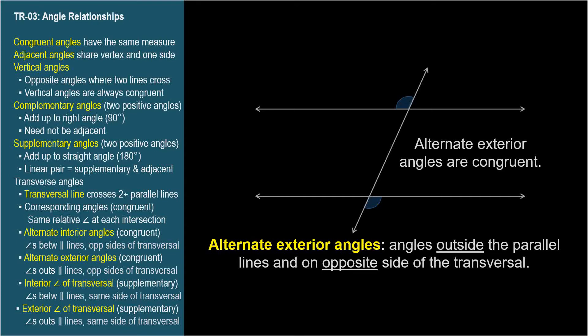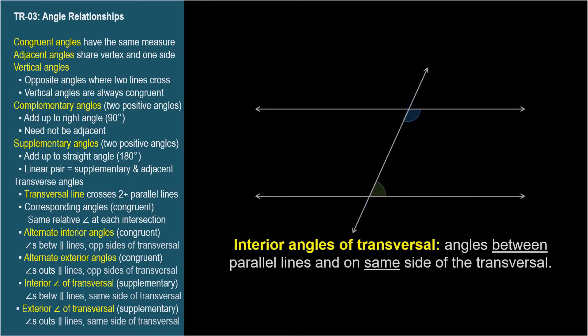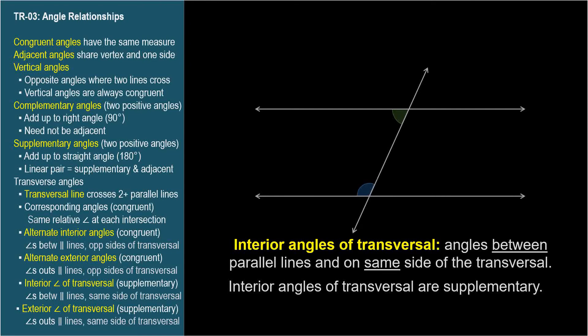Interior angles of a transversal are the pairs of angles on the inside of the parallel lines and on the same side of the transversal. Interior angles of a transversal are supplementary — their sum is a straight line, or 180 degrees.